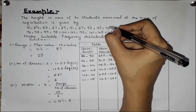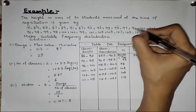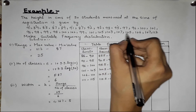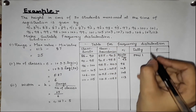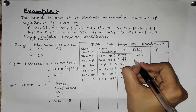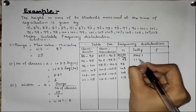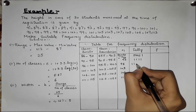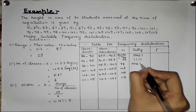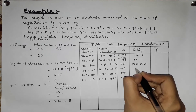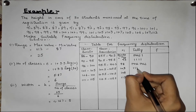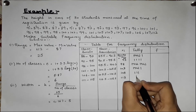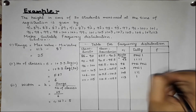Counting the tally marks: the first class has 4 values, the next class has 10 values — 1, 2, 3, 4, 5, 6, 7, 8, 9, 10. Then the next class has 5 values, and the following class also has 5 values. This completes the tally.